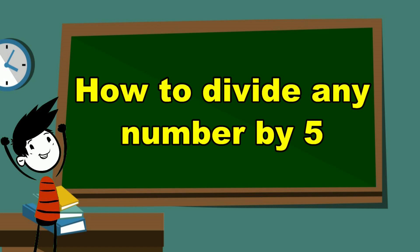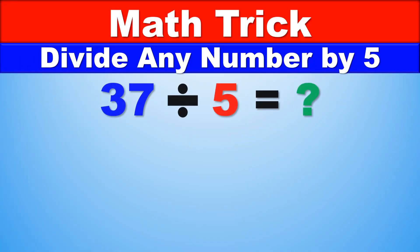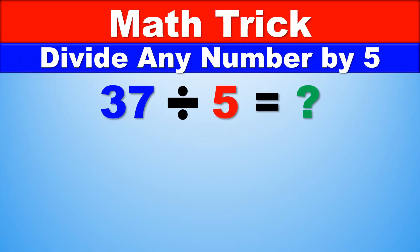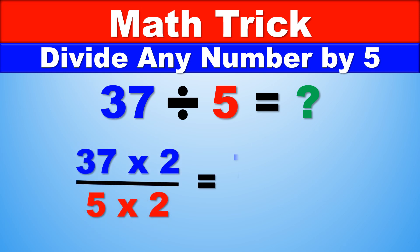And we're going to start by taking a look at this example here. What's 37 divided by 5? How do we figure this out? What we're going to do is multiply 37 times 2.